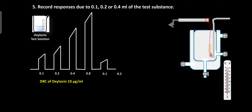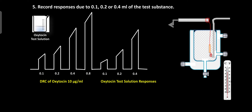Add 0.2 ml of test oxytocin solution and record the response for 30 seconds. After 30 seconds, stop the drum and change the Ringer's solution. After the washing period, record the baseline without any drug. Then add 0.4 ml of test oxytocin solution and record the response for 30 seconds. After 30 seconds, stop the drum and change the Ringer's solution. These are the responses due to additions of the test oxytocin solution.